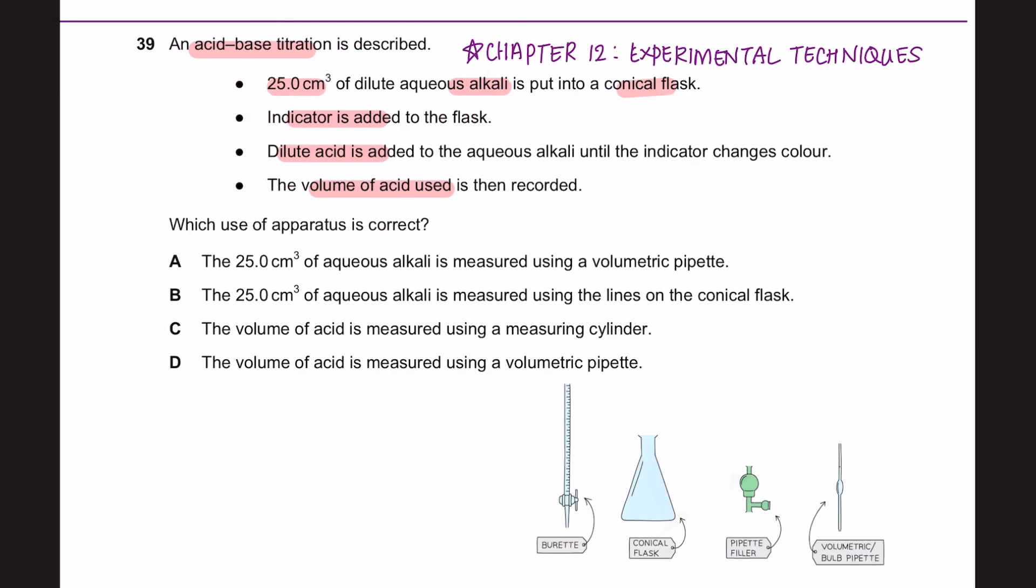When measuring volume for liquids, it can be determined by using several types of apparatus, depending on the level of accuracy needed. For instance, a burette is the most accurate way of measuring a variable volume of liquid between 0 cm³ to 50 cm³. Typically in the process of a titration.